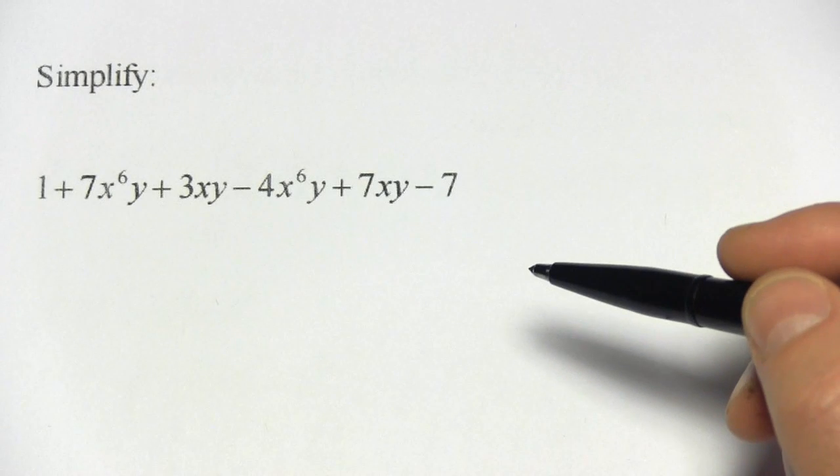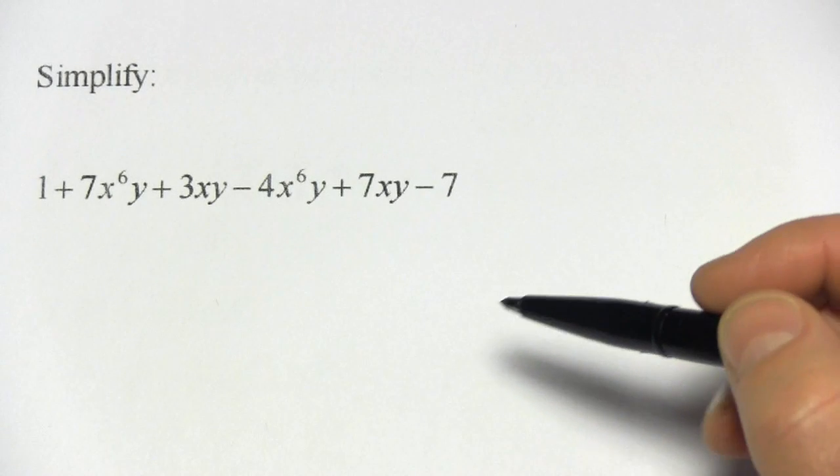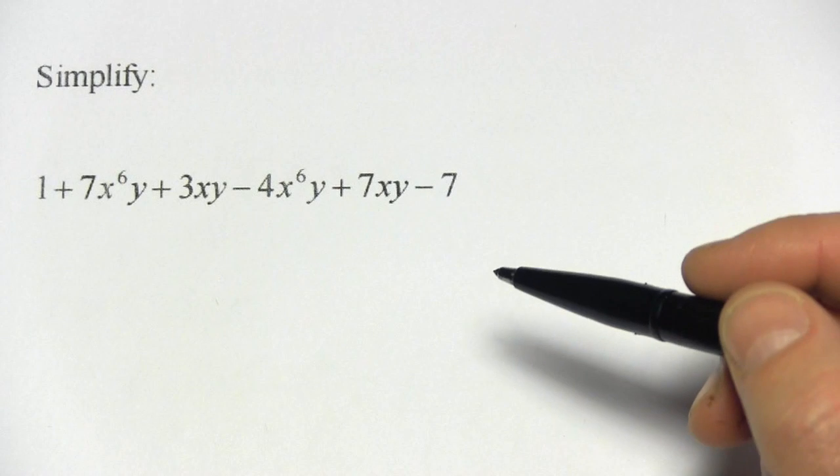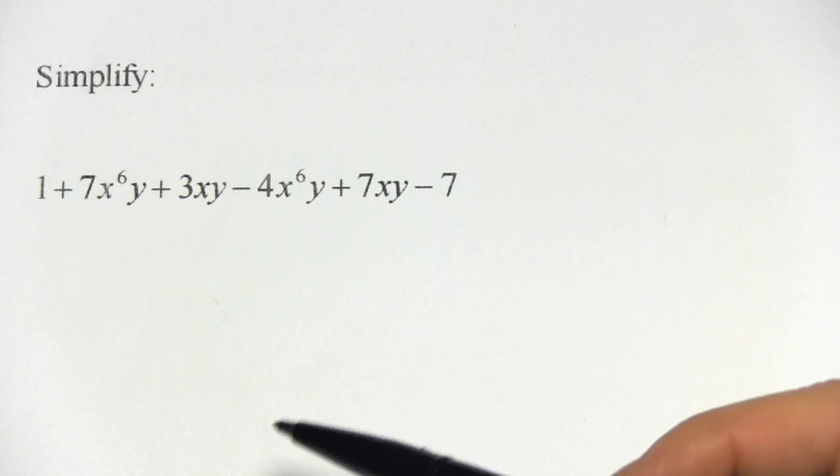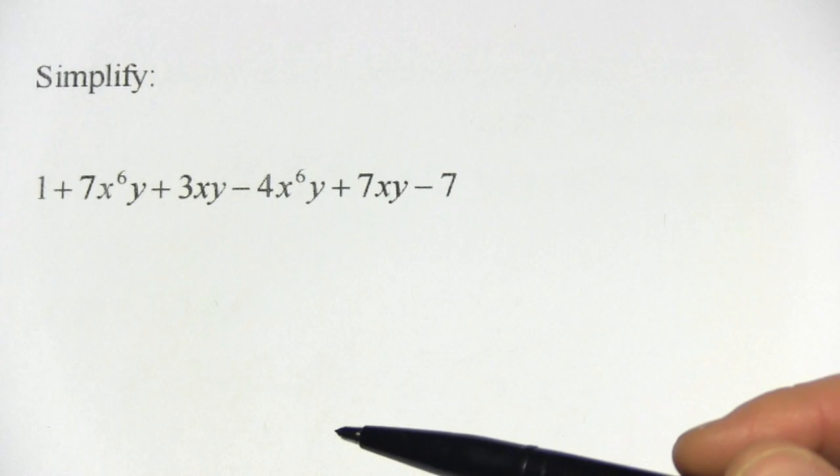In these problems, we are combining like terms, some of which have exponents. And the trick here is that the exponents matter. A term is not a like term unless it has the same letters with the same exponents.